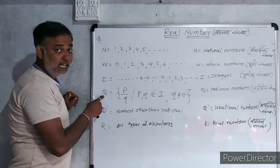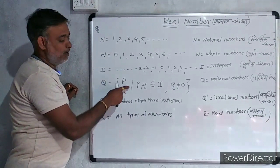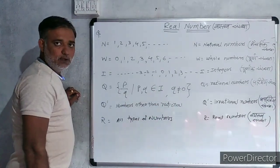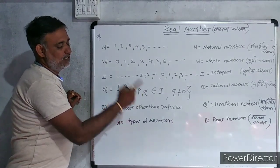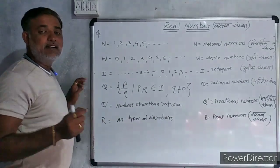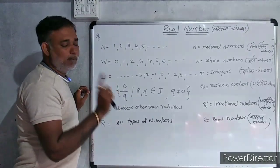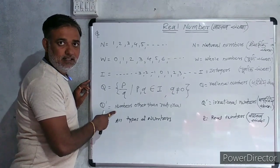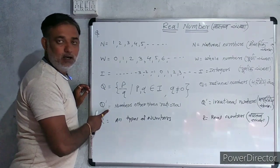And then Q is the set of rational numbers. It is in the form of P upon Q, where P and Q belong to I and Q is not equal to 0. Then Q prime, Numbers other than rational, that are called irrational numbers. Like radical 3, radical 7, that are irrational numbers.